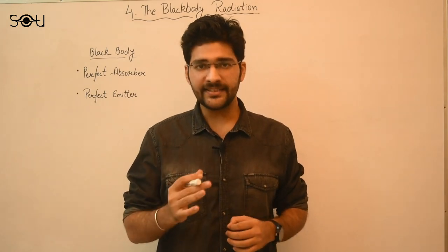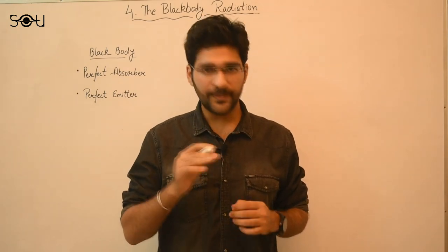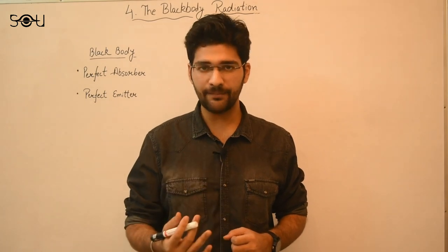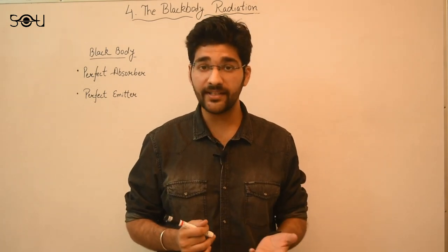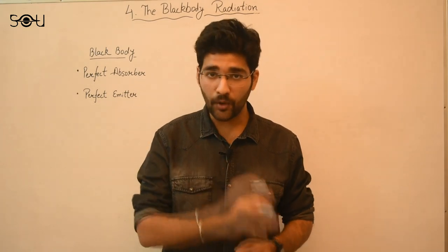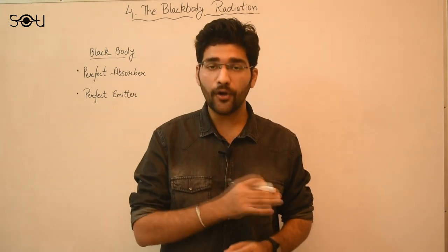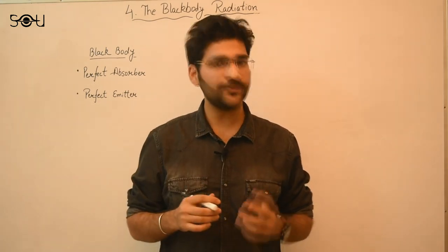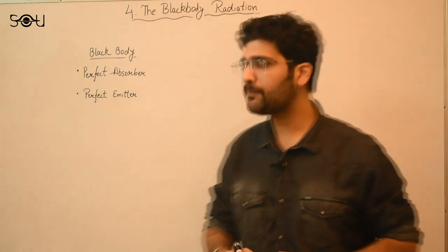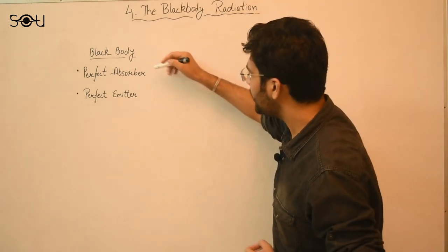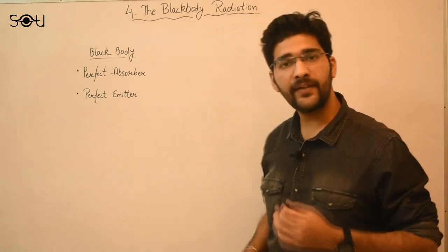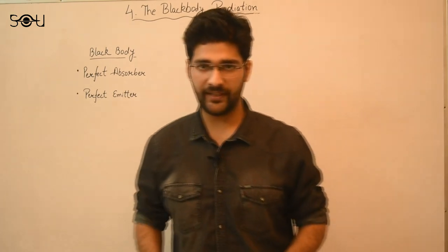Now you may ask: if that body is absorbing all the radiation and the temperature of that body is remaining constant, what is the radiation doing? The answer is: that body is also emitting all the radiation that is falling on it. So by definition, a black body is not only a perfect absorber of radiation but also a perfect emitter of radiation.